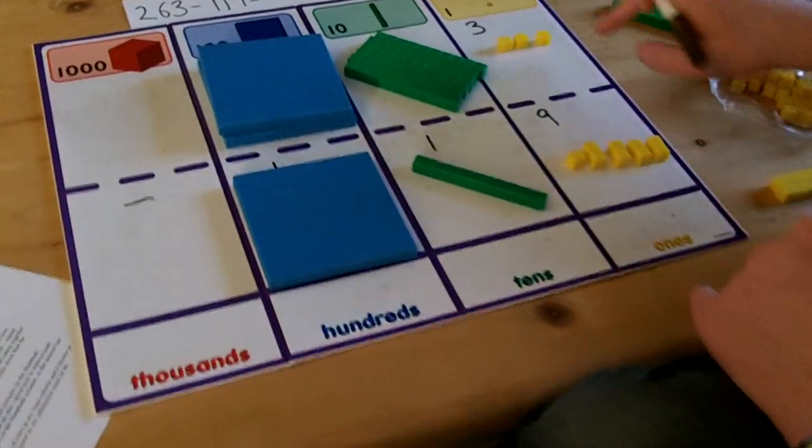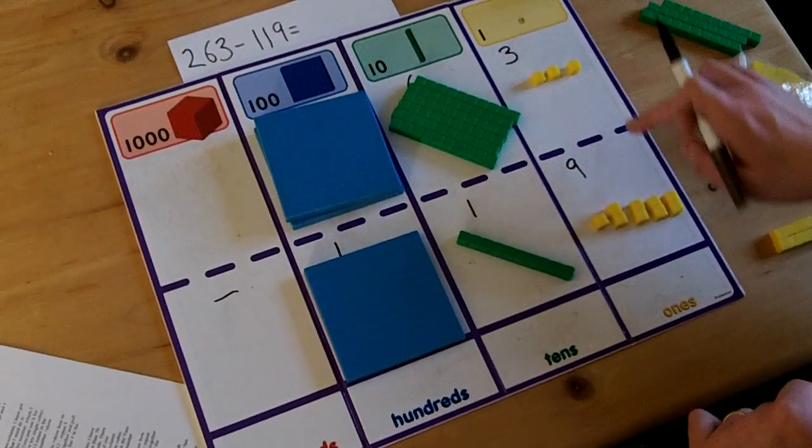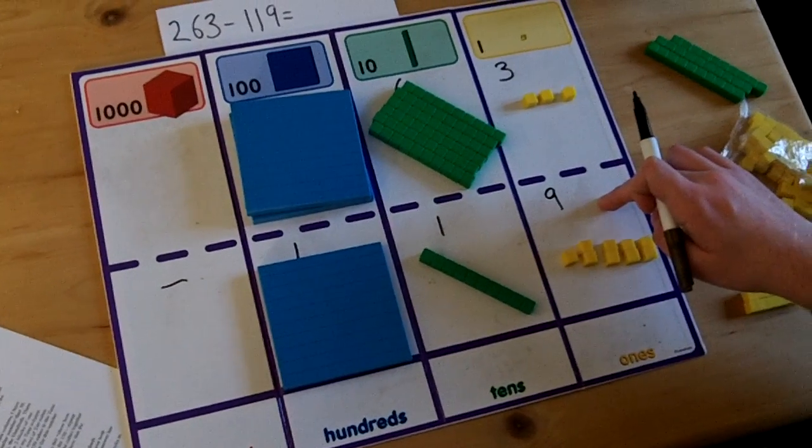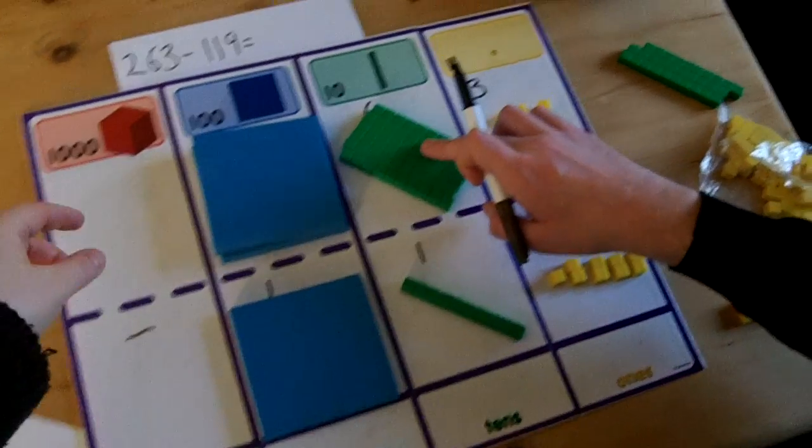First I must solve the subtraction in the ones column. In the ones column I have got 3 subtract 9. I cannot do this as 3 is a smaller number than 9. What I must do is exchange from the next column, the tens.